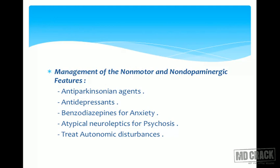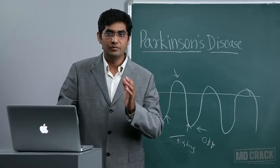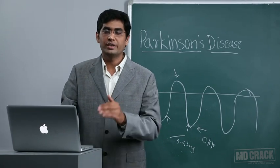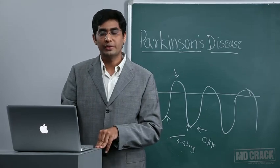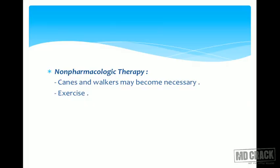Management of non-motor and non-dopaminergic features: some non-motor features improve with levodopa, but others need specific treatment — antidepressants, benzodiazepines for anxiety, atypical neuroleptics or antipsychotics for psychosis. Autonomic disturbances also need management: patients should modify their lifestyle to control orthostatic hypotension by increasing salt and fluid intake.